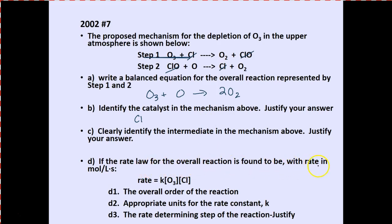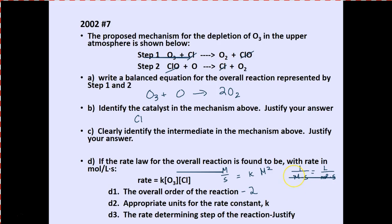If the rate law is experimentally determined, the overall order of the reaction is two. For the appropriate unit of the rate constant, we need molarity per second to equal K times molarity squared, giving units of 1/M·s, which is the same as liters per mole per second. Because molarity is moles per liter, the appropriate unit for K is L/(mol·s).